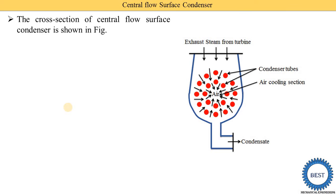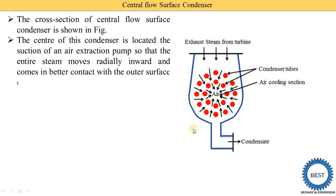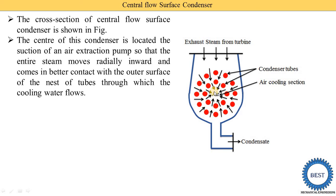The cross-section of the central flow surface condenser is shown in this figure. In this diagram, you can see that the center of this condenser is where the suction of the air extraction pump is provided. At the center, there is a suction pipe for the air extraction pump, so the entire steam moves radially inwards.